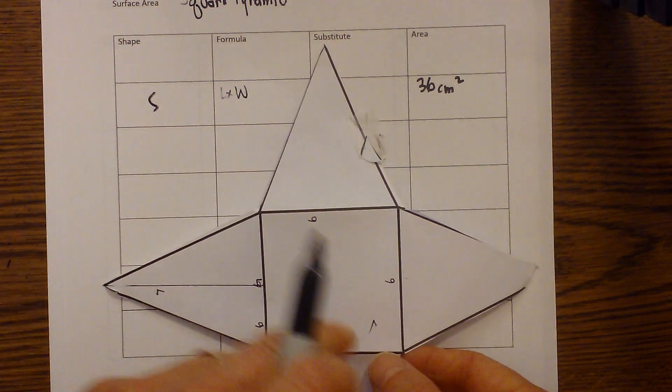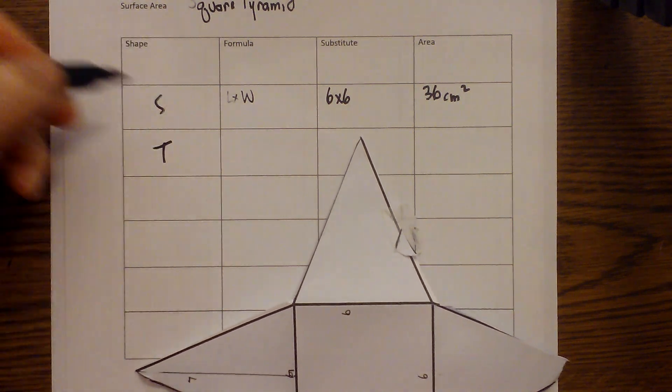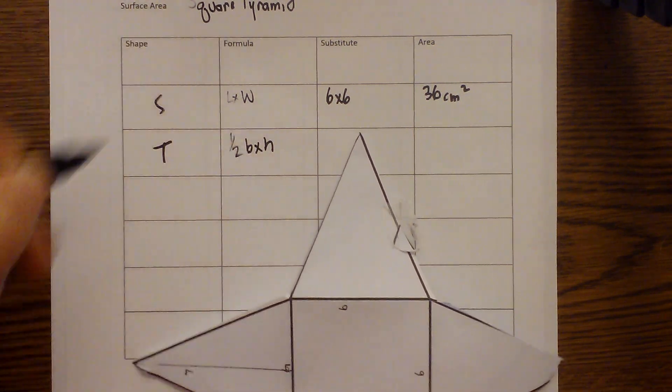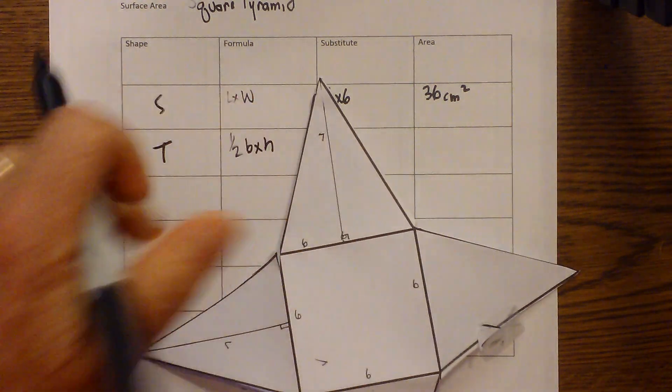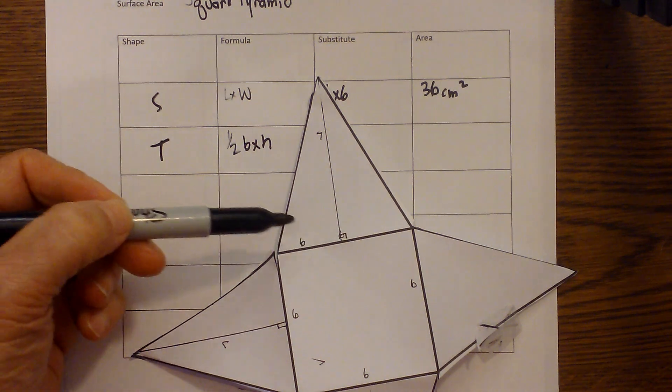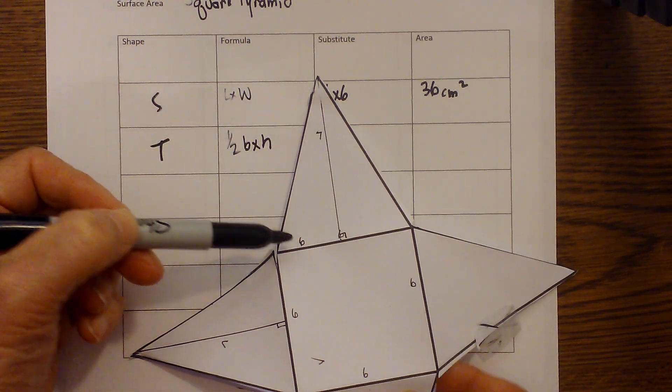Now I have four triangles. So I'm going to put T for triangle and the formula for area of a triangle is one half base times height. And I went ahead and measured the base and there's the base running from here to here. Notice that it's at a 90 degree angle and the height is 7 and the base is 6.